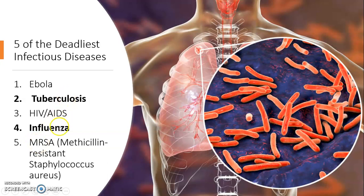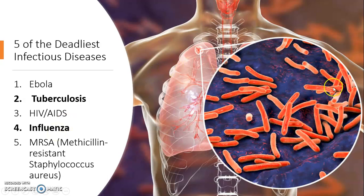As you can see, I have both tuberculosis and influenza highlighted or bolded. These are bolded because in the next slide I will explain the characteristics of these two and explain why they are the most deadliest infectious diseases.